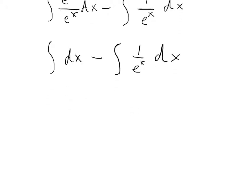So we can integrate the first term pretty simply, and we know that that's just going to be x minus the integral of 1 over e to the x dx.